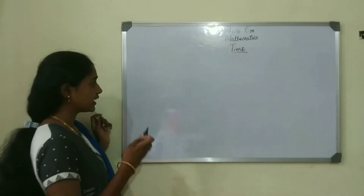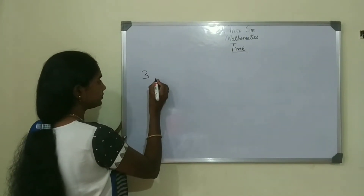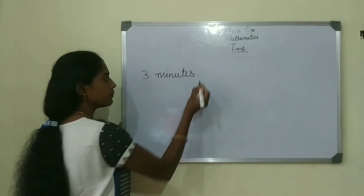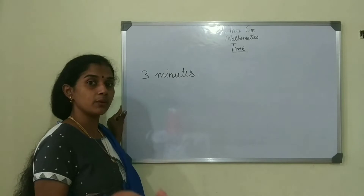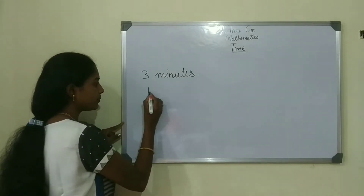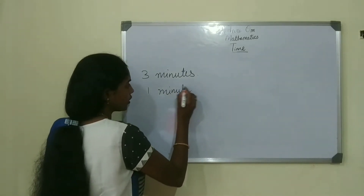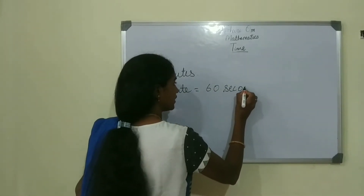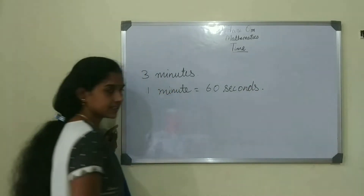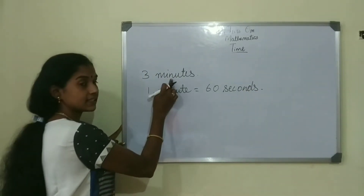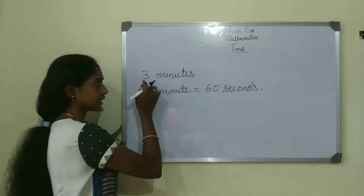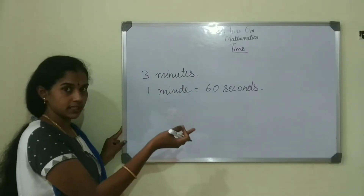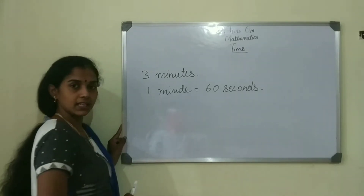Let us take 3 minutes. 1 minute has 60 seconds. If it is 3 minutes, as we did it in hours to minutes, we are going to multiply 60 with 3.